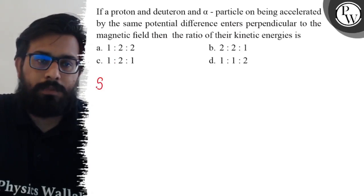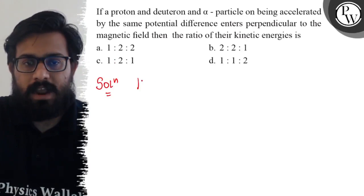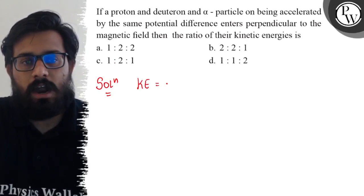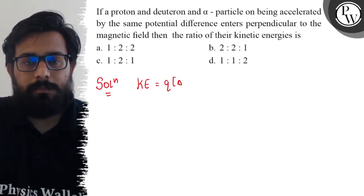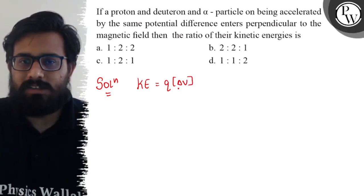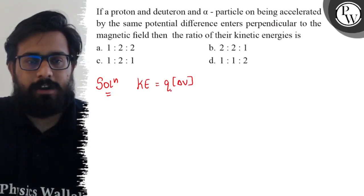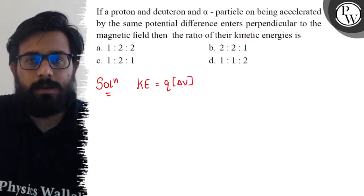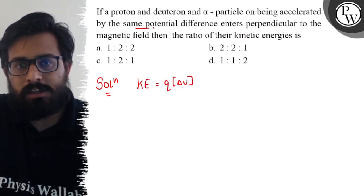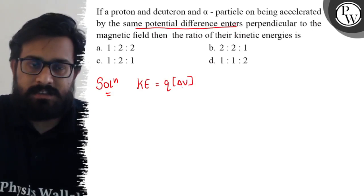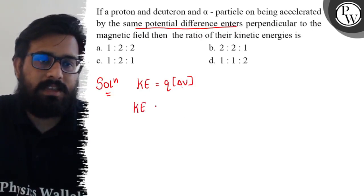From this part we know that kinetic energy equals charge into ΔV. KE can be written as q into ΔV, where ΔV is the potential difference. For all the charged particles, potential difference is the same, so directly we can say that kinetic energy depends on the charge only.